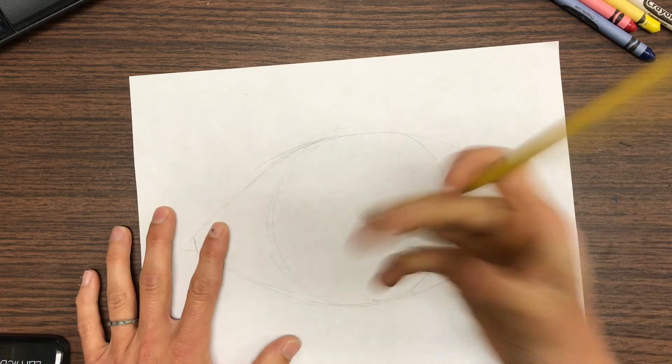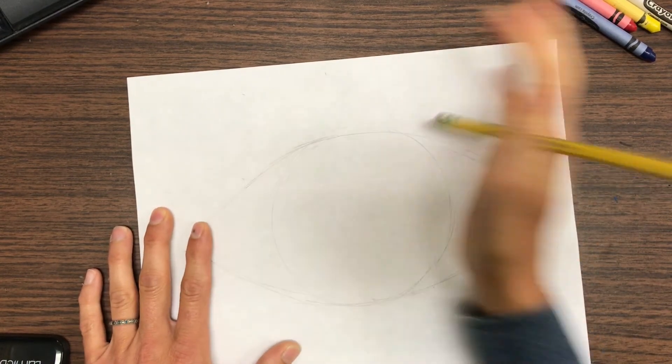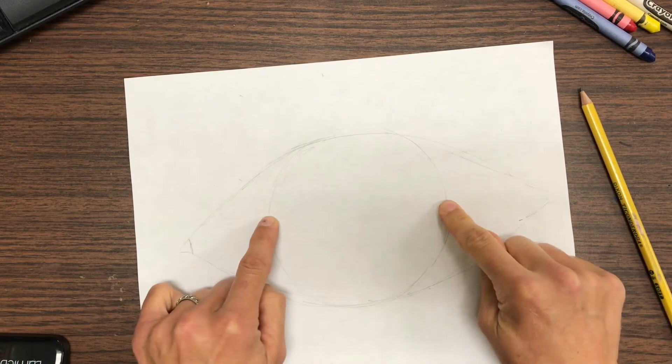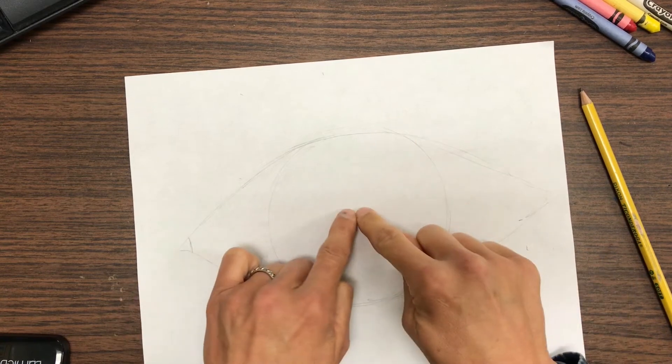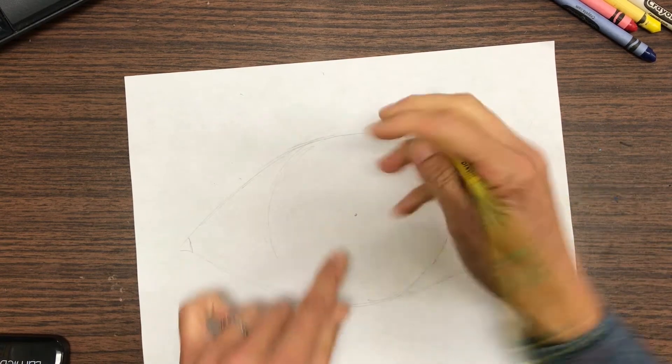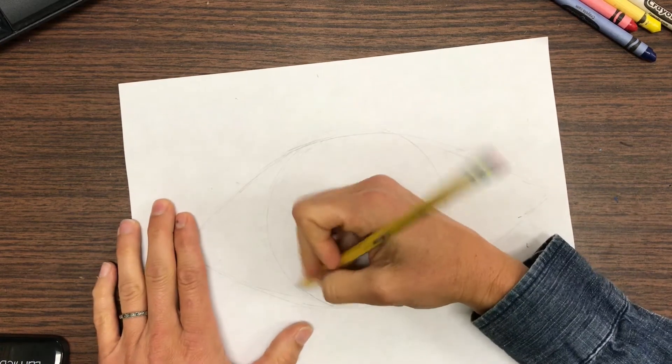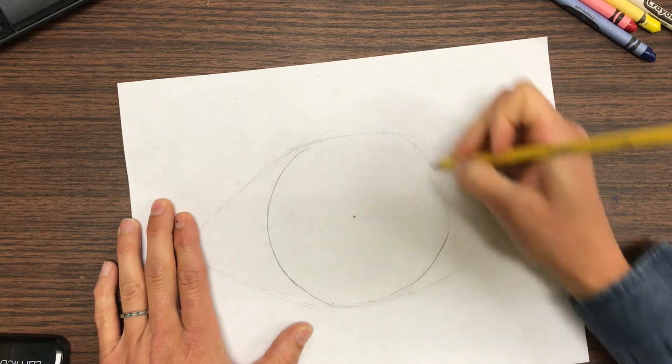An easy way to estimate or guess where the center is is by putting your fingers on either side and then running your fingers together. So if I run my fingers together this looks like about the center. I could do the same thing from top to bottom. That looks pretty good. Let me darken this up a little bit so you can see it better.